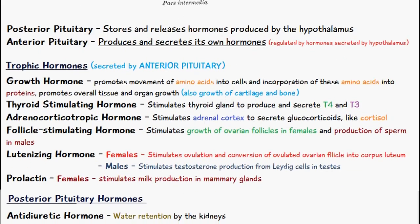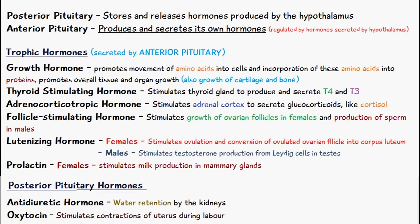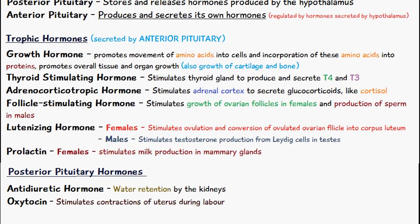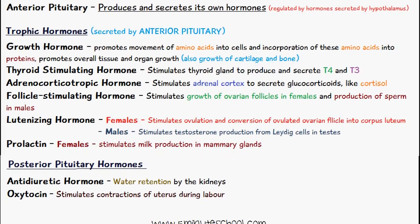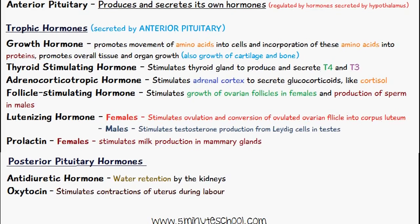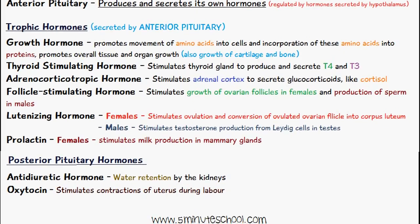The posterior pituitary gland releases two hormones. Antidiuretic hormone is responsible for water retention by the kidneys — I've made a separate video on that. Oxytocin stimulates contractions of the uterus during labor.